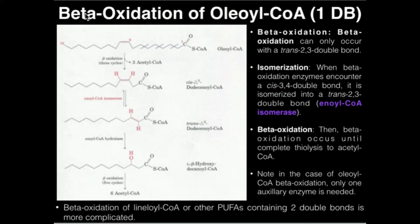In general, there are two primary monounsaturated fatty acids that have one double bond that we would run across. The first one is called oleoyl-CoA, or in its non-conjugated form it's just oleate, or oleic acid. This particular unsaturated fatty acid has 18 carbons and one double bond at the 9 position. The other monounsaturated fatty acid is palmitoleoic acid, having 16 carbons and also a double bond at the 9 position.